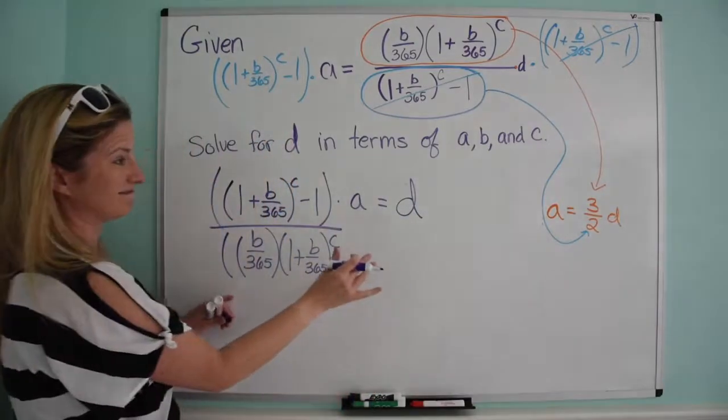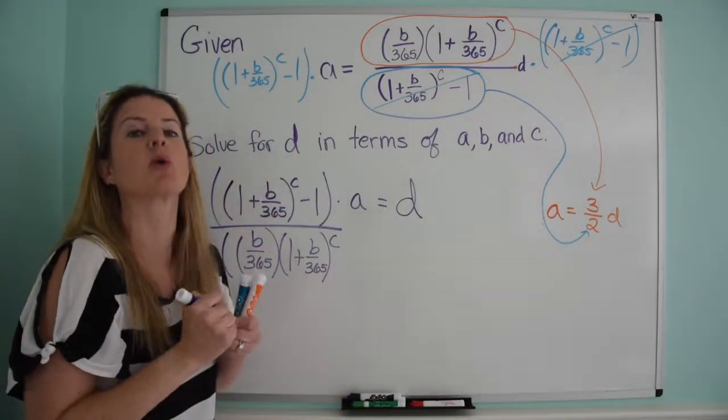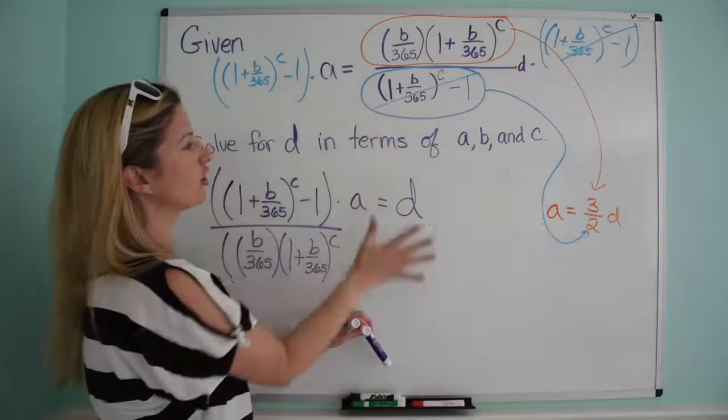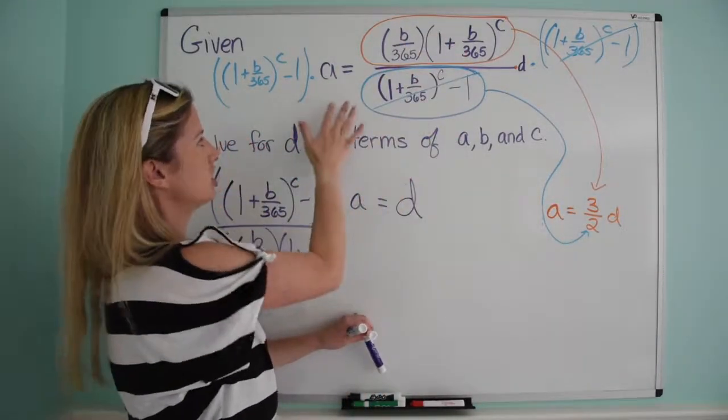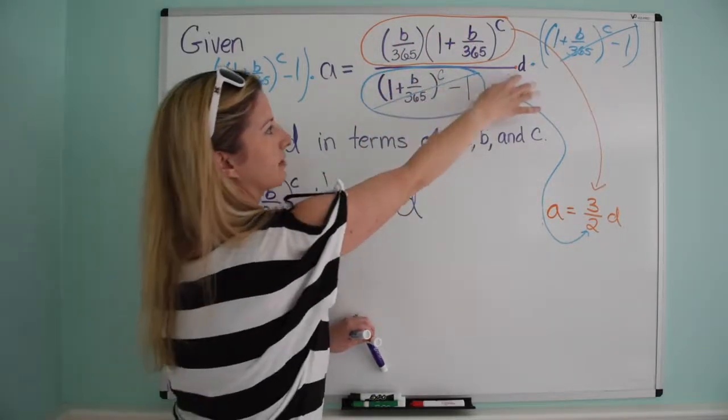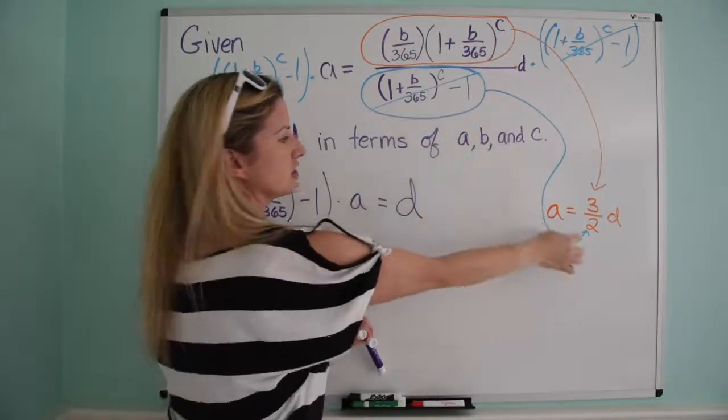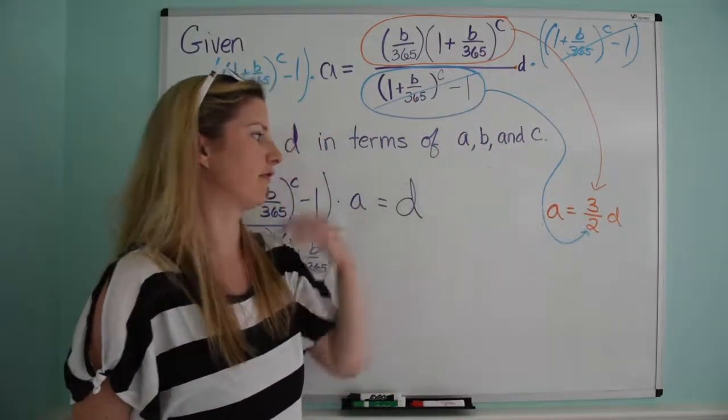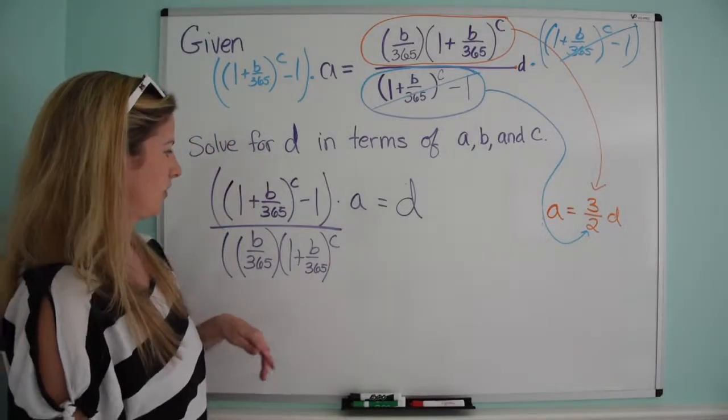So we're done. We took the same approach as we would have taken with something incredibly simple, which is a equals 3 over 2d. All you have to think about is it's literally just a equals a numerator over a denominator times a variable, and then you solve it the same way you would if you broke it down into just a simple fraction like that.